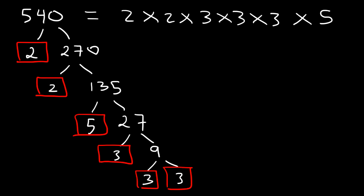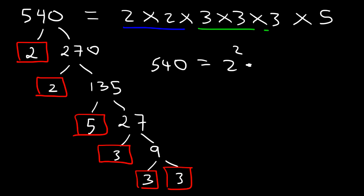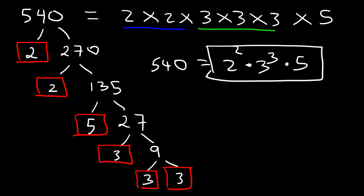Now let's write 540's factorization using exponents. We have two 2s, so that's 2 squared. There are three 3s, so that's 3 to the third power. And then times 5. So the prime factorization of 540 using exponents is 2 squared times 3 to the third power times 5.